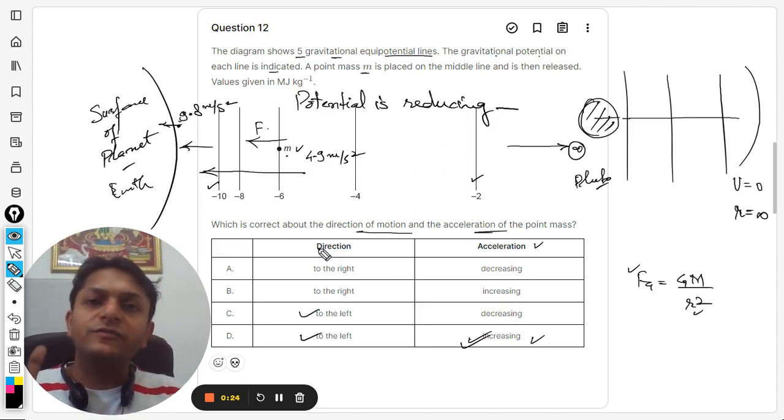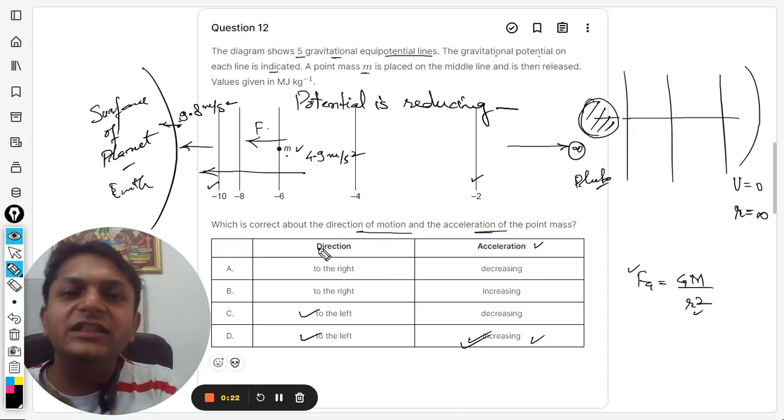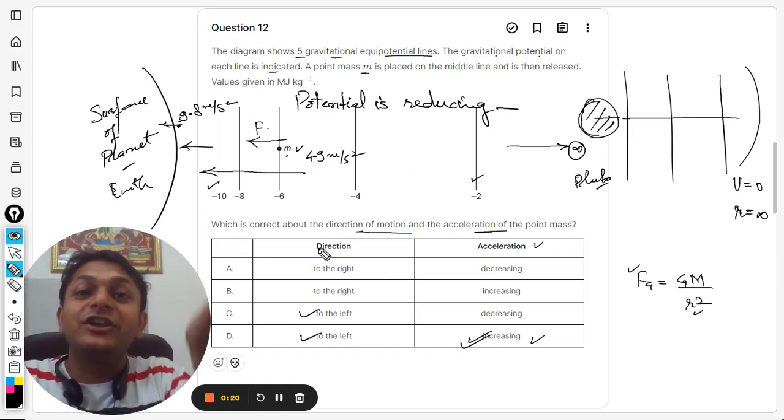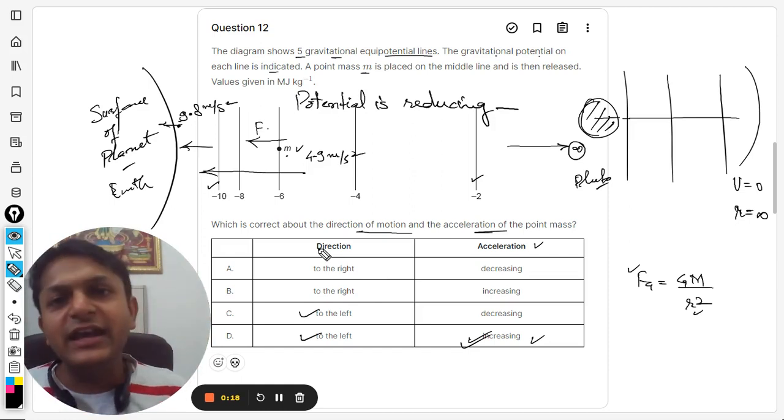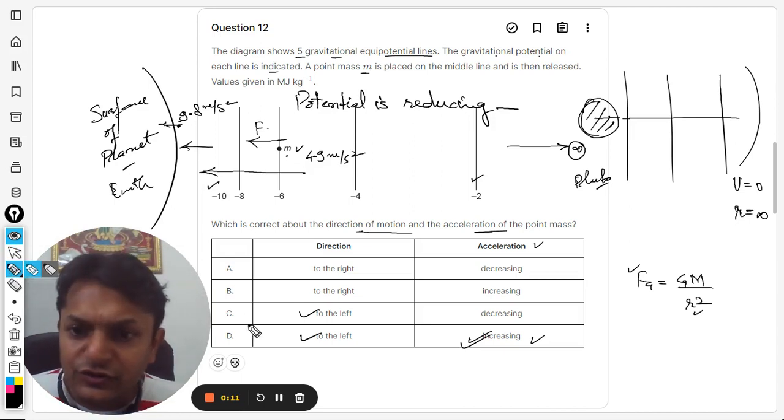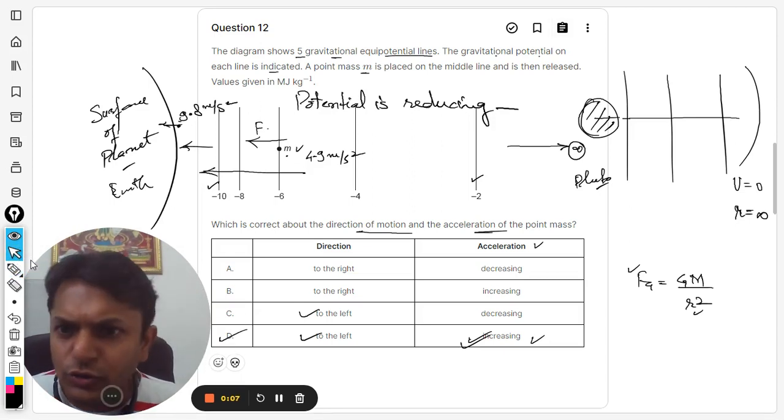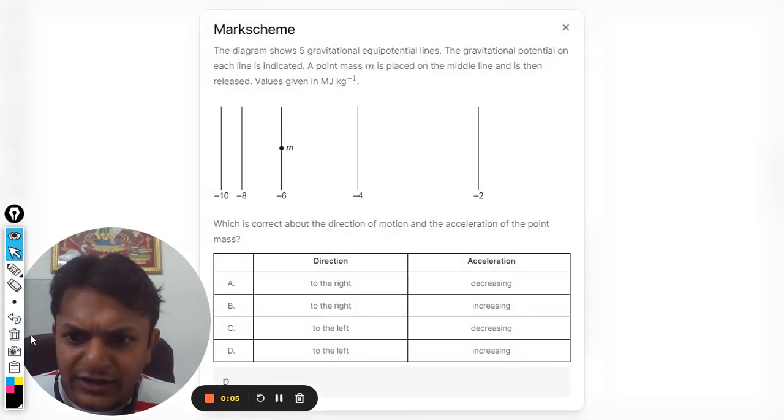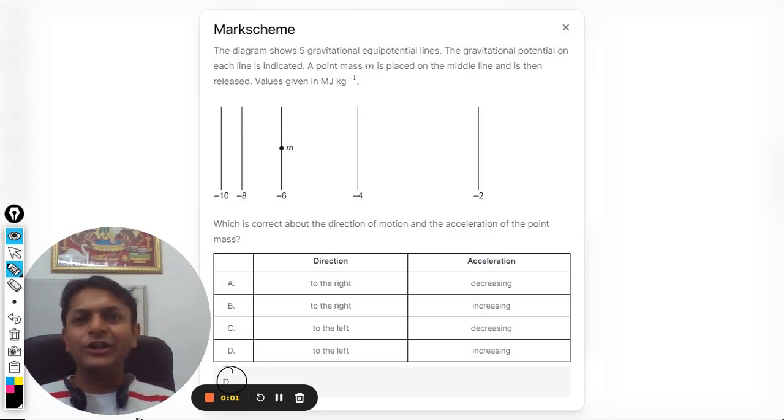Why? Because when the distances are reducing, the gravitational force is increasing, and that is why the acceleration will also be increasing. So my dear students, I tried my best to explain you the question. So the answer is D. And I can show you the mark scheme also, and you can clearly see the answer is D. All the rest, bye.